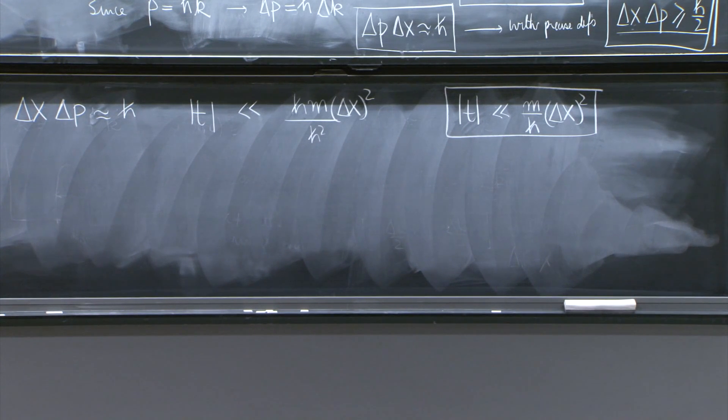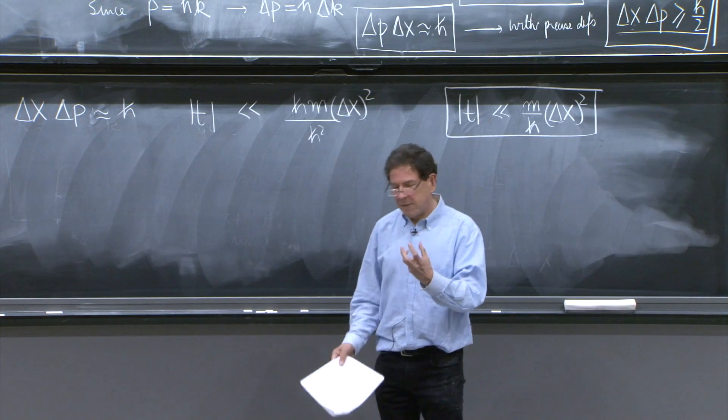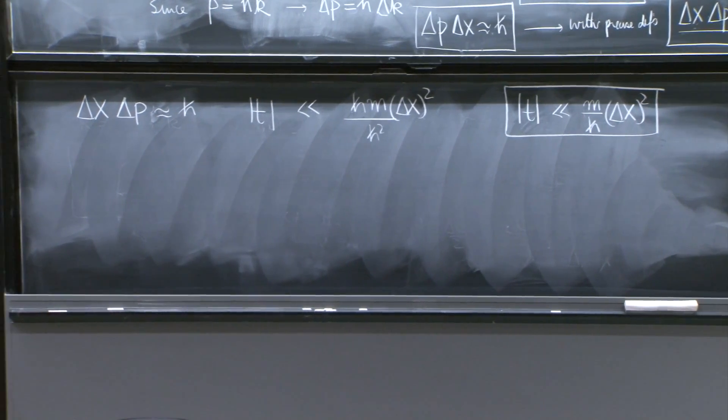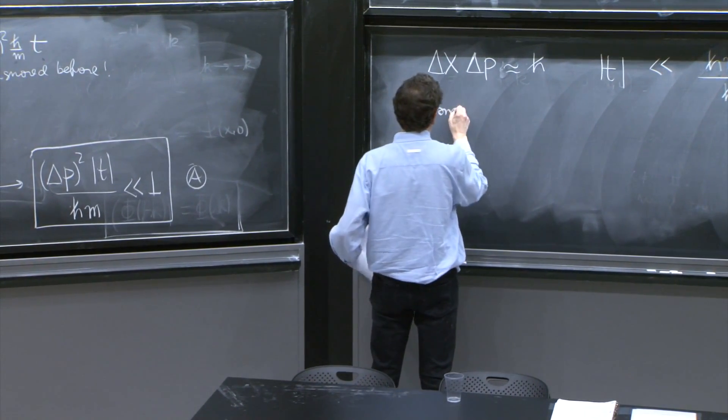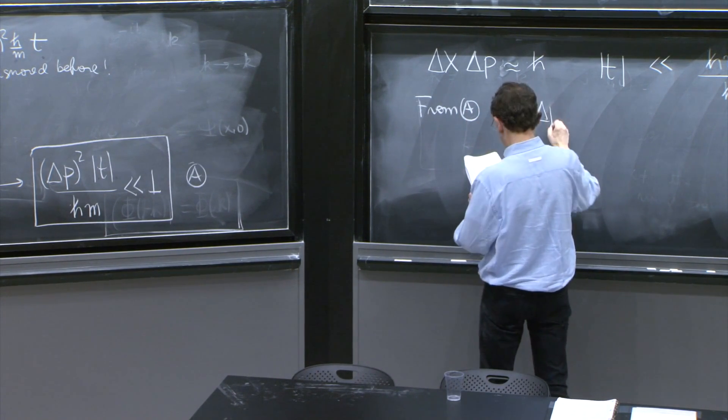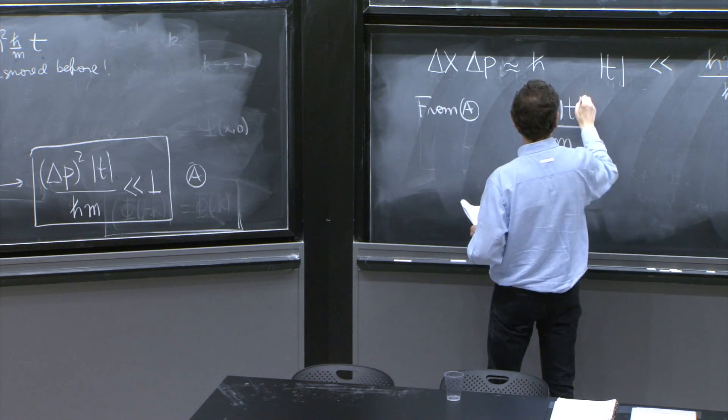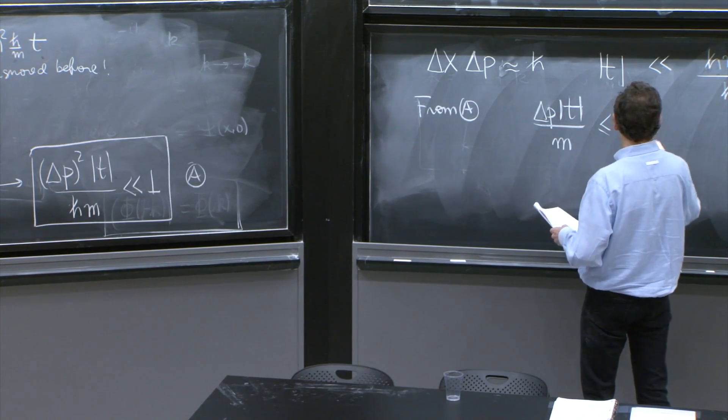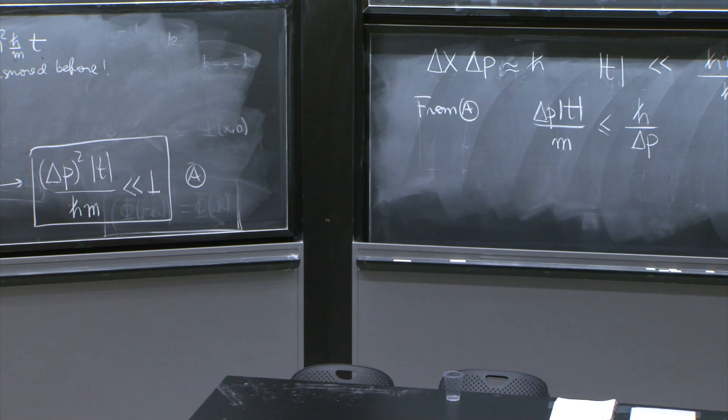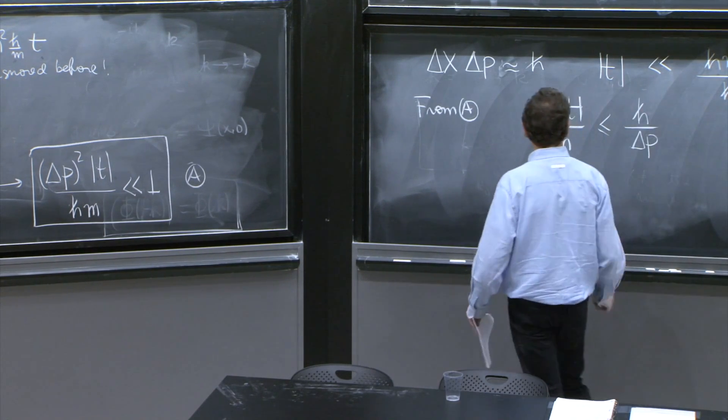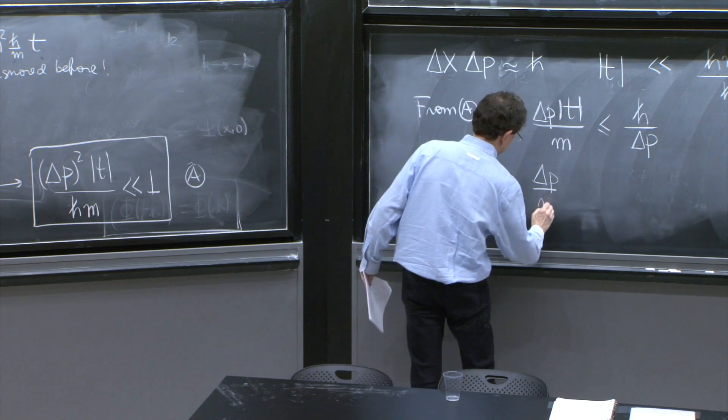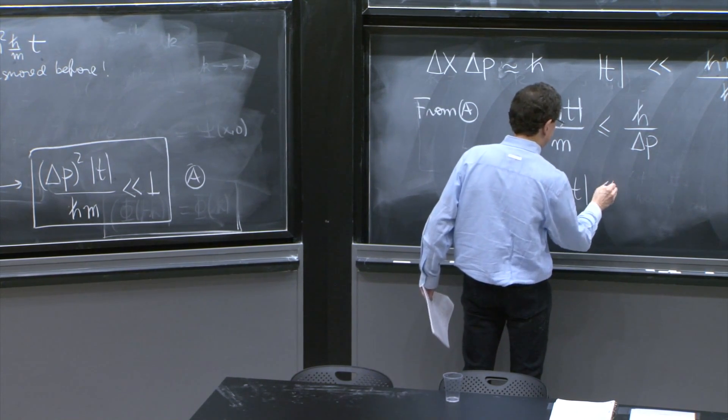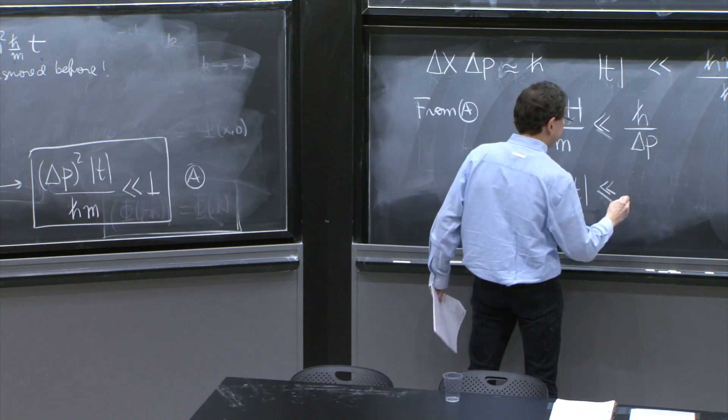There is one way to write this inequality that you can intuitively feel you understand what's happening. Take this form A from A, write it as delta p t over m less than h bar over delta p, and h bar over delta p is delta x. So you get delta p over m t much less than delta x.